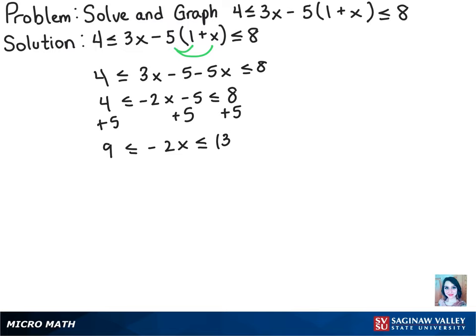Now we can divide both sides by negative 2 to get x alone. Remember we have to flip the sign to do that because we always flip the sign when we multiply or divide by a negative number.